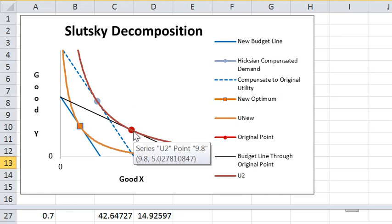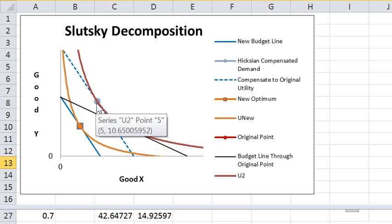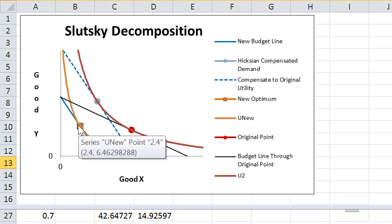If, however, the good is inferior, the substitution effect says less good X, the income effect would say more good X because with a reduction in income with an inferior good you actually consume more of it.